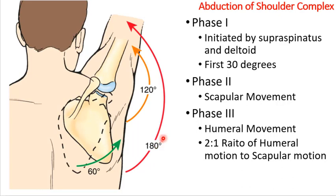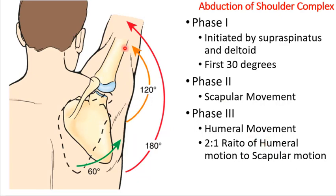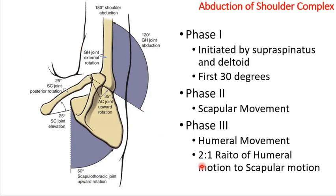The total range of motion is 180 degrees: 120 degrees — two-thirds — comes from the glenohumeral joint, and 60 degrees — one-third — comes from the scapulothoracic joint. It happens in phases. The first 30 degrees of movement is exclusively glenohumeral, initiated by the supraspinatus — keep in mind the supraspinatus is an abductor, and without it the deltoid would not effectively do elevation to the side. Phase one is glenohumeral movement, phase two you start getting scapular movement, and phase three returns to humeral movement as the whole complex lifts.